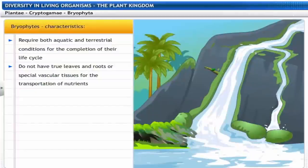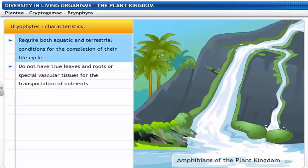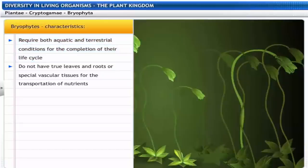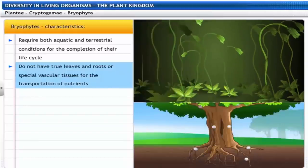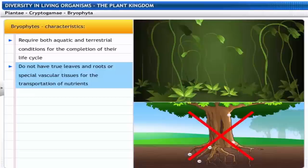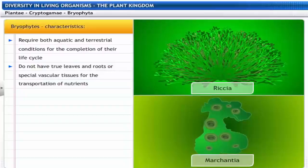Bryophytes are often called amphibians of the plant kingdom as they require both aquatic and terrestrial conditions for the completion of their life cycle. Their body is differentiated to form stem and leaf-like structures but not true leaves and roots. Vascular tissues — special tissues for the transportation of nutrients and water — are also absent in Bryophytes. Bryophytes include Riccia and Marchantia.